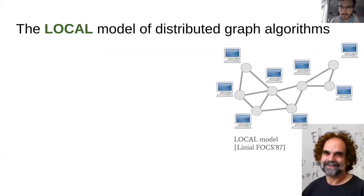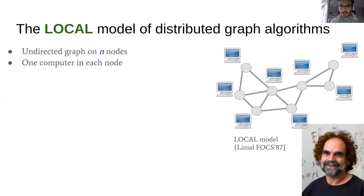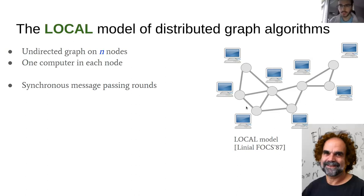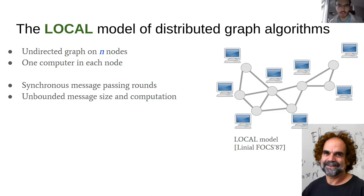In computer science we have this subfield where we study distributed algorithms using some models. One of them is called the local model of distributed computing. In this model you have a huge graph of nodes — think of the internet — and you should think of each node as being a computer. These computers can communicate via the links in synchronous message passing rounds. Everything is very simple; there is no asynchrony.